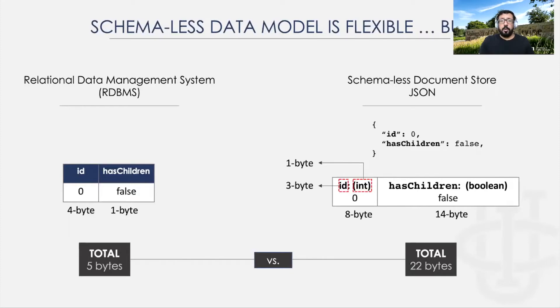This is because we need to store the schema within each record. For instance, we need three bytes to store the field name ID, one byte for the type tag, and four bytes for the value itself. Whereas in the relational model, the schema information is stored in a centralized catalog.